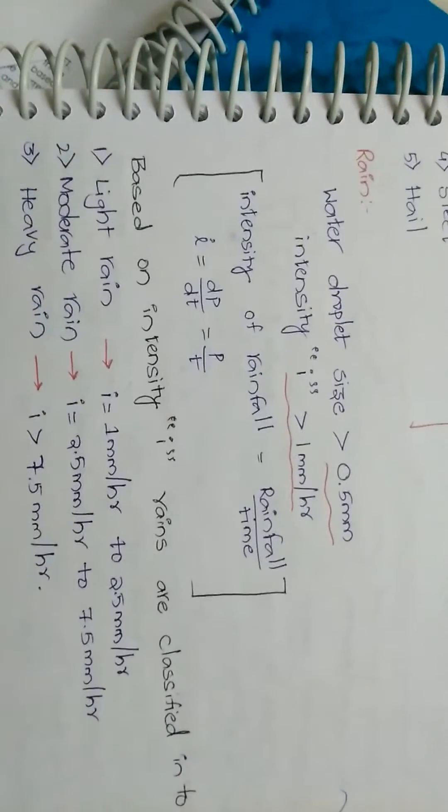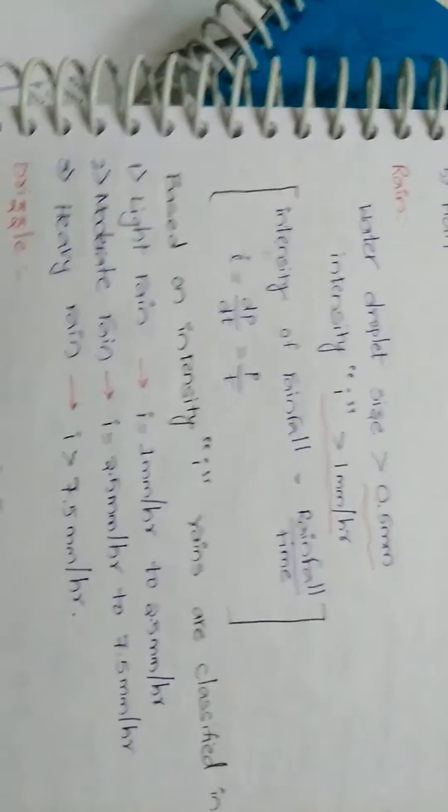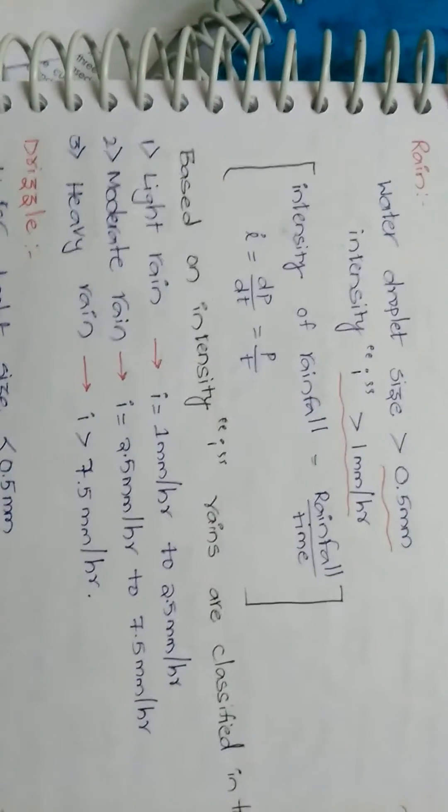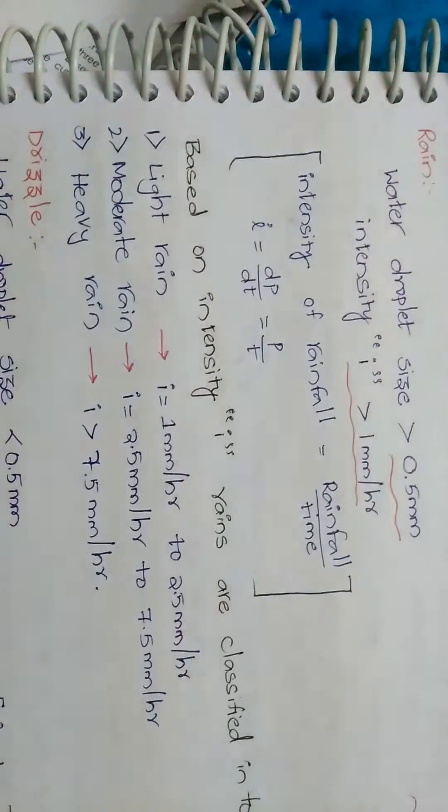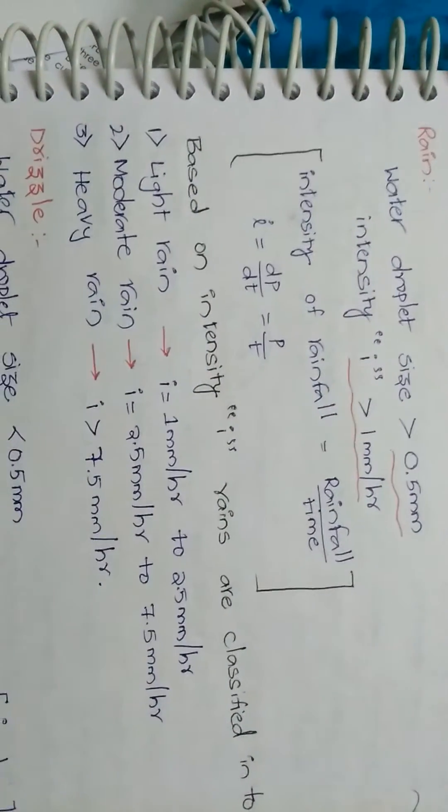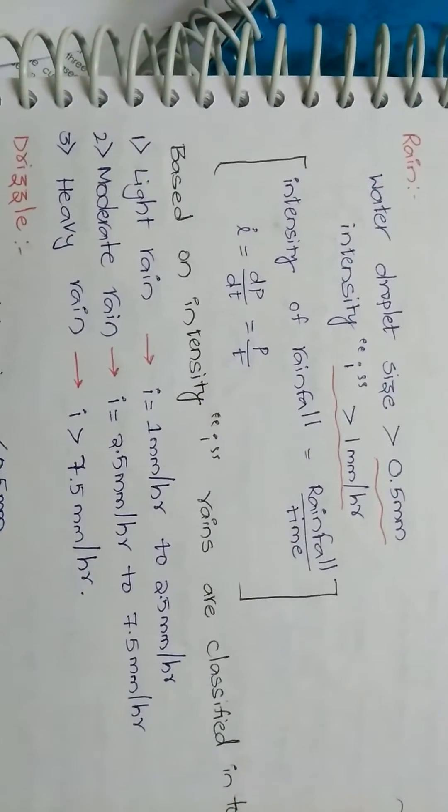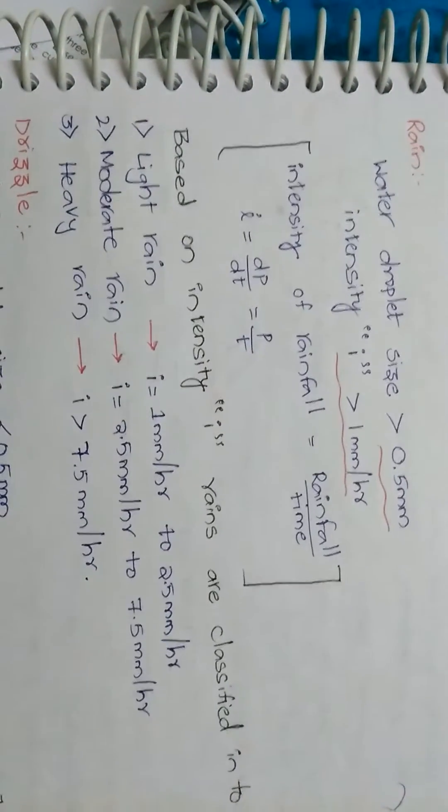Based on the intensity, rainfall are classified into light rain, moderate rain, heavy rain. Light rain: I equals 1 mm per hour to 2.5 mm per hour.